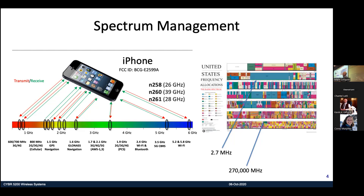A couple of new bands have been added to 5G, and the iPhone 15 is going to have many millimeter wave bands. Up in the 26 GHz, 39 GHz, and 28 GHz ranges, those have all been auctioned off as well.